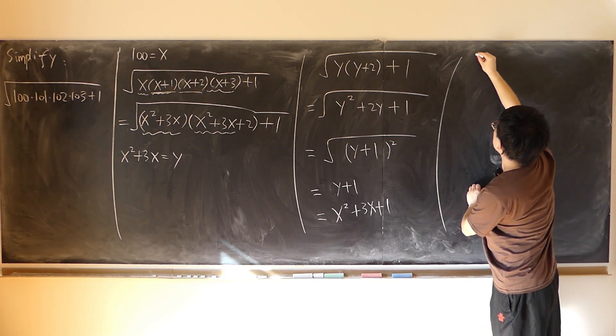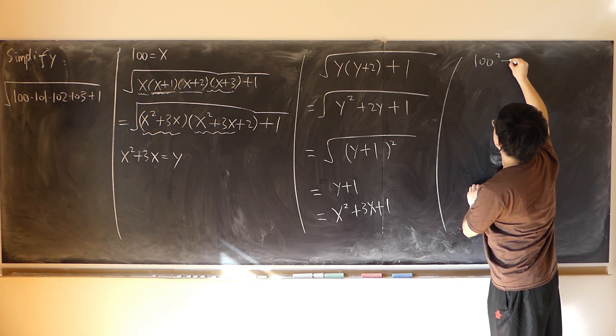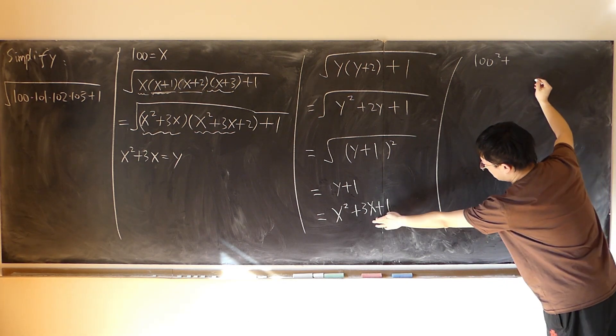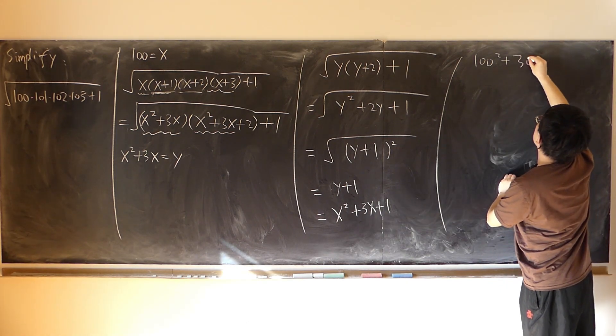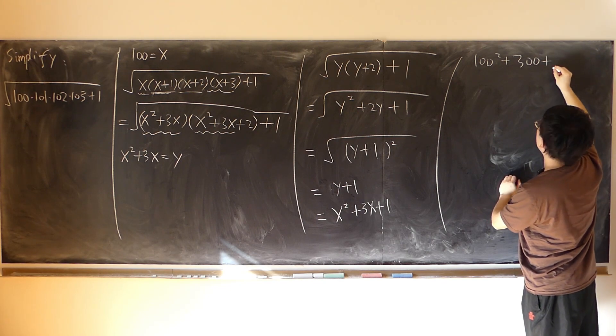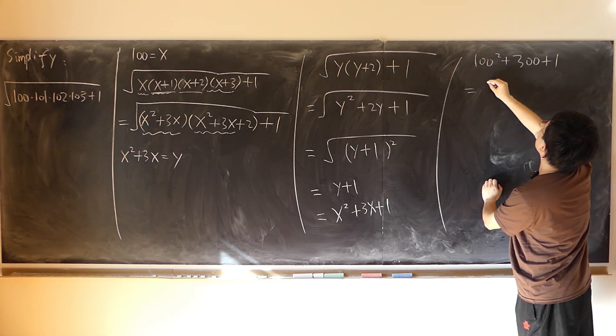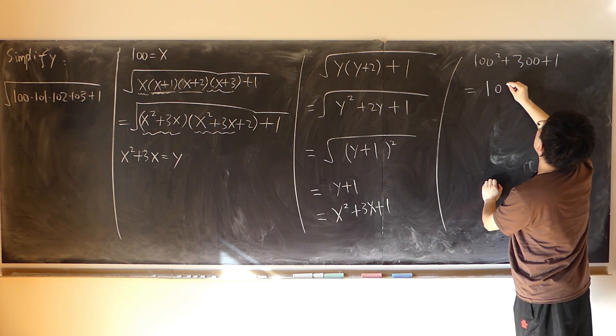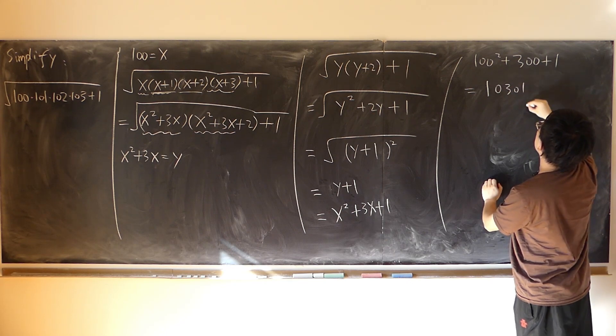That's essentially 100 squared plus 3 times 100, that's 300, then plus 1. So that's 10,300 plus 1, which is 10,301.